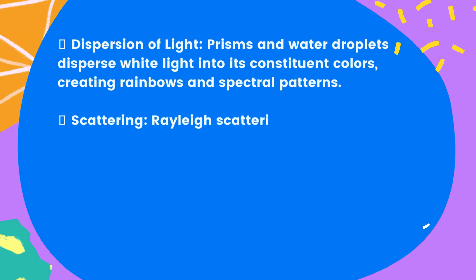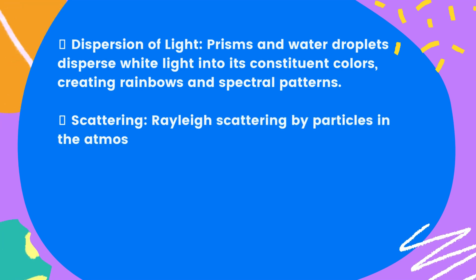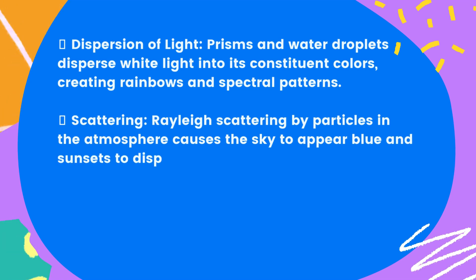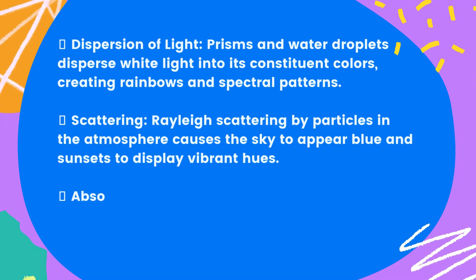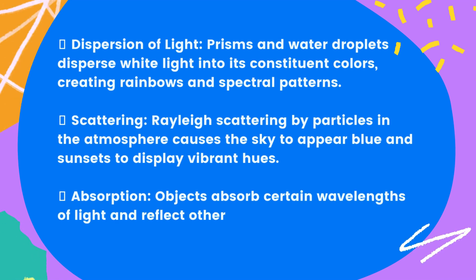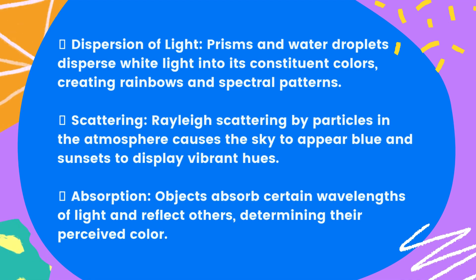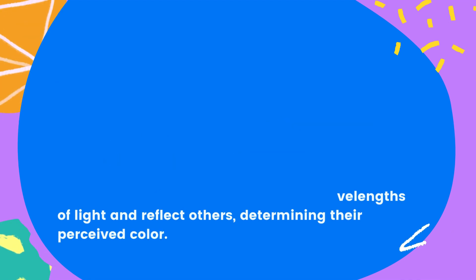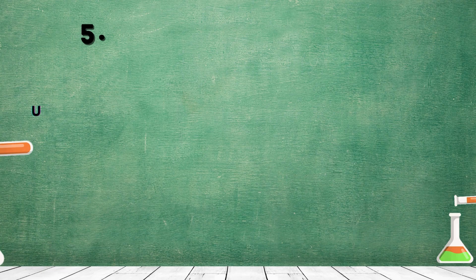Scattering: Rayleigh scattering by particles in the atmosphere causes the sky to appear blue and sunsets to display vibrant hues. Absorption: objects absorb certain wavelengths of light and reflect others, determining their perceived color.